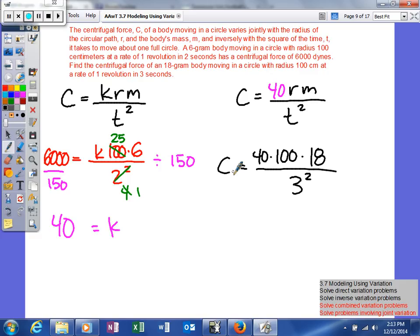We'll do the math and figure this out. 3 squared is 9. 9 goes into itself once and into 18 twice. If you multiply those together, that's 40 times 100 times 2, which gives us 8,000. Because our units earlier were in dynes for centrifugal force, that answer will also be in dynes.